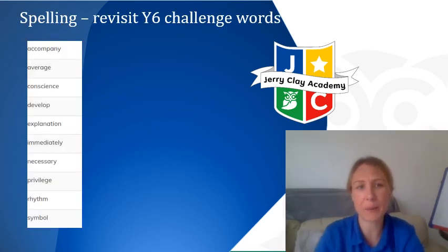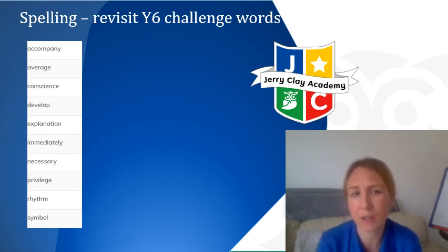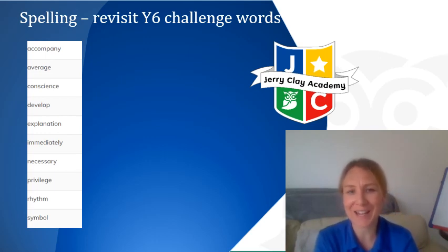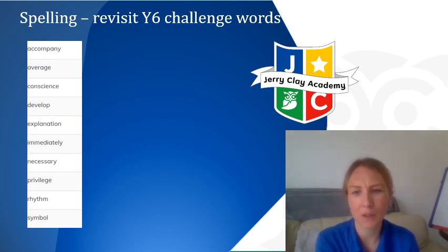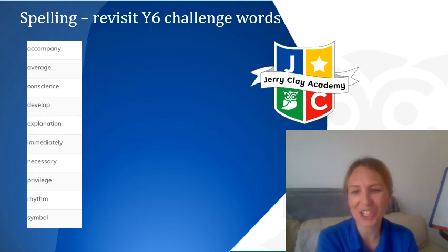Your spellings for this week are again taken from the Year 6 challenge words. I'm going to go through each of those in turn, repeat after me with the pronunciation, and then we'll move on to the next part. So we've got: accompany, average, conscience, develop, explanation, immediately, necessary, privilege, rhythm, and symbol.